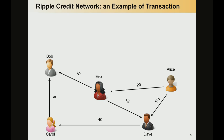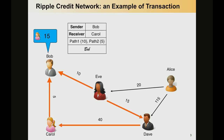Imagine that we have a network like the one depicted here and Bob wants to settle 15 credits with Carol. The first thing that Bob has to do is to find enough paths with enough credit from Bob to Carol. Once he has done that, he has to create a transaction with a single sender — in this case Bob — a single receiver, Carol, and two paths. Each path is annotated with the amount of credit that is settled through that path.